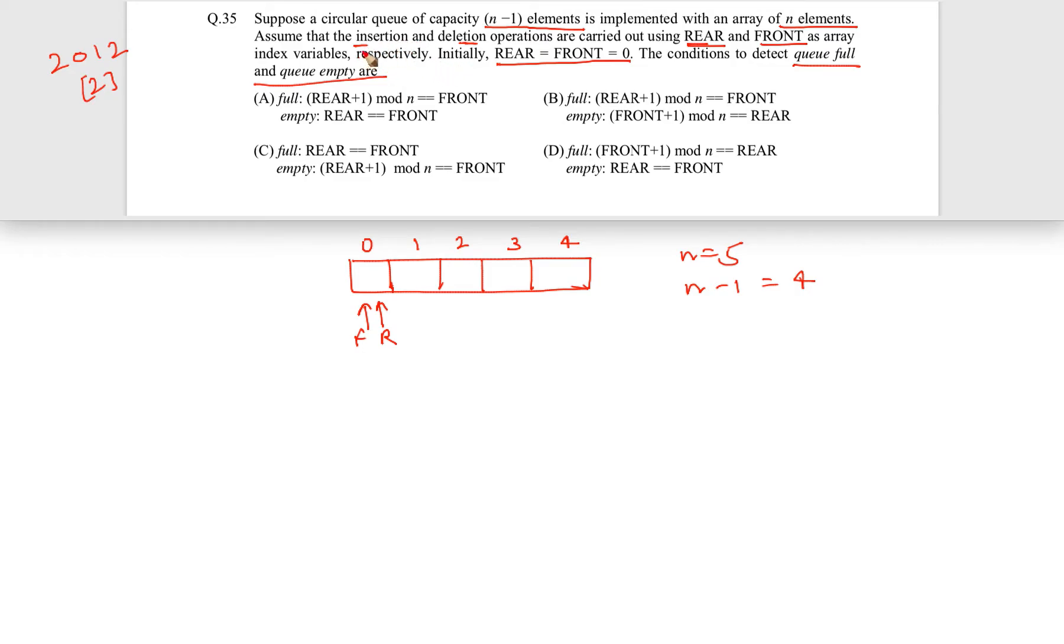Assume that the insertion and deletion operations are carried out using rear and front as array index variables respectively, which means that when we are inserting, we are inserting from backside. And when we are deleting, then we are deleting from front. So, usual Q operations.